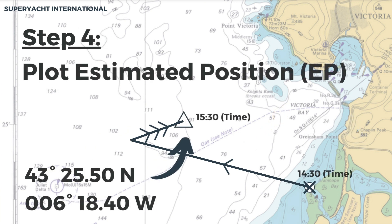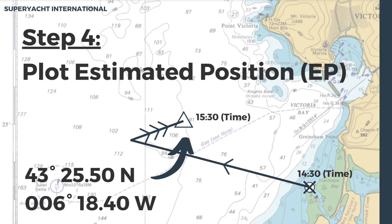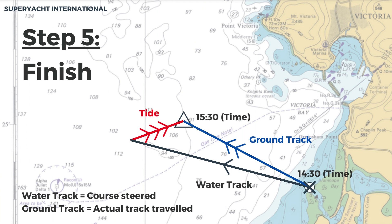Step 4: plot the estimated position. The final position after the water track and tide have been calculated is your estimated position. Label this with a triangle and note the time. Step 5: finish off the process by adding the ground track. The ground track is the actual course traveled through the water and shows the importance of planning your route to avoid dangers.